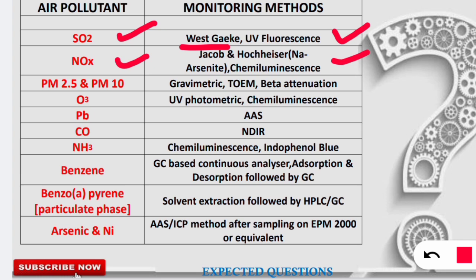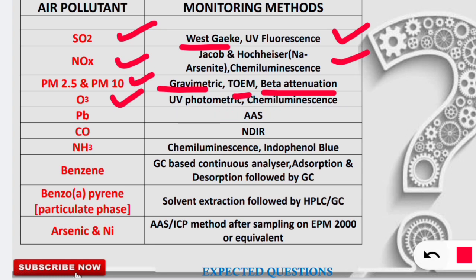Particulate matter — PM2.5 and PM10 — is monitored using the gravimetric method, beta attenuation method, and the TEOM method, which stands for Tapered Element Oscillating Microbalance. You have to remember this terminology. Next, ozone (O₃) is monitored using the UV photometric method and the chemiluminescence method.